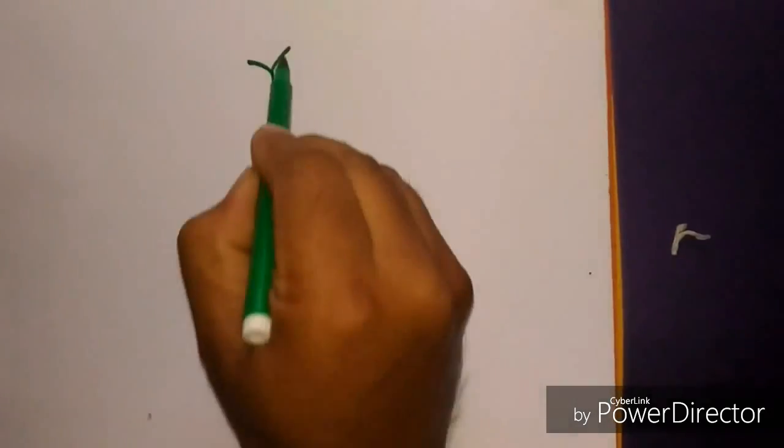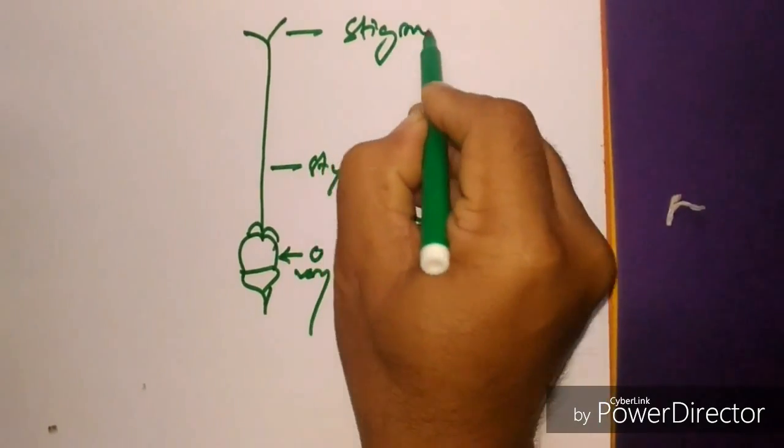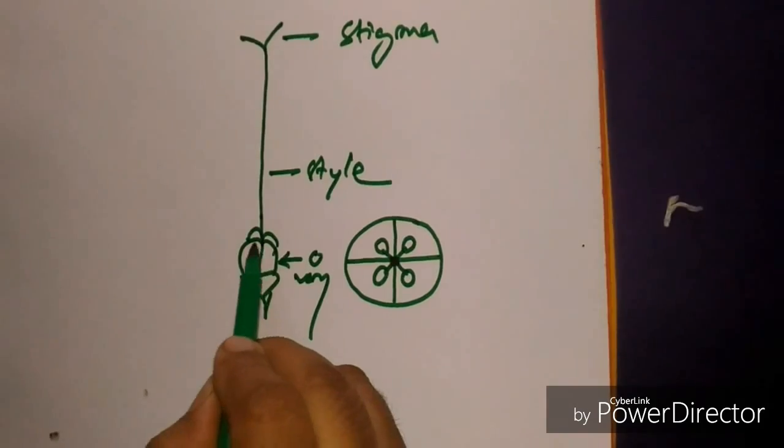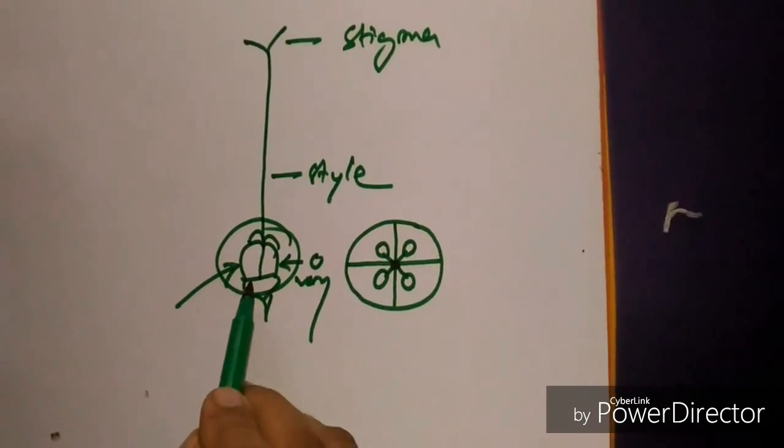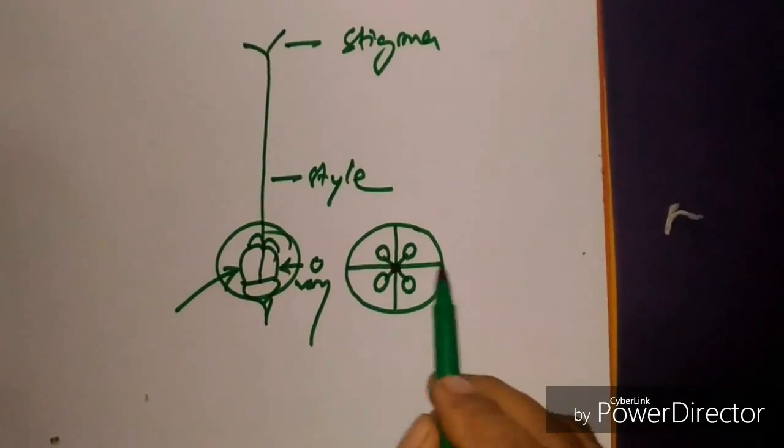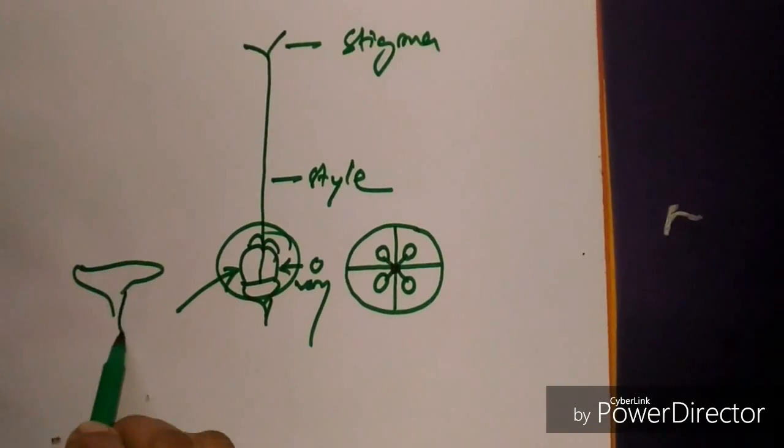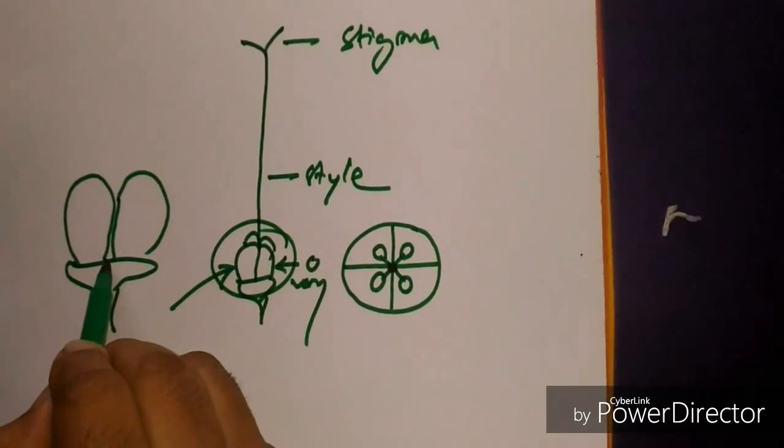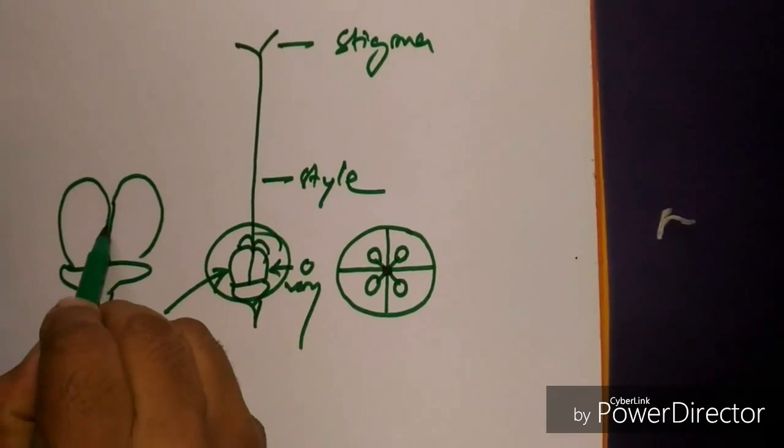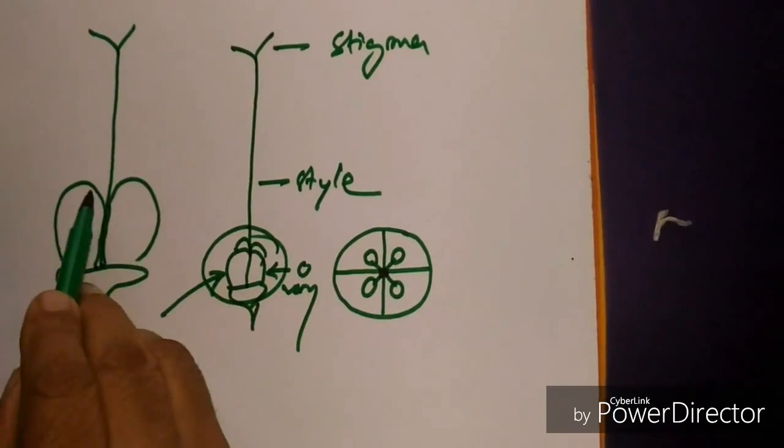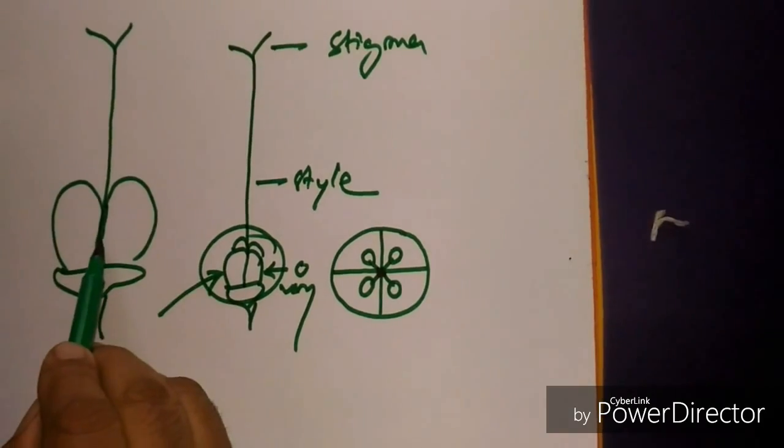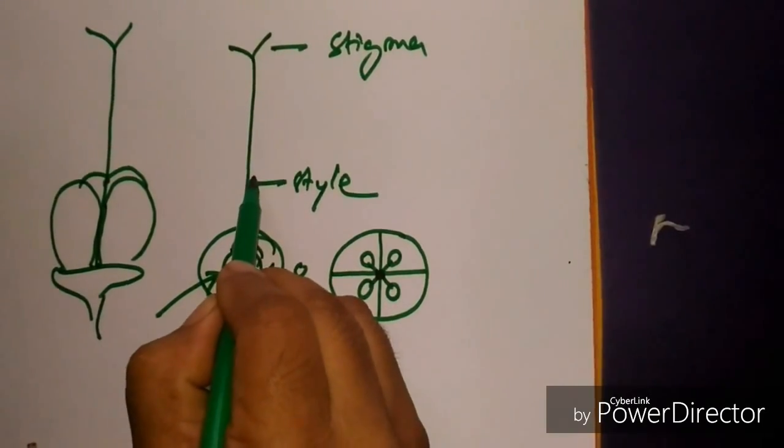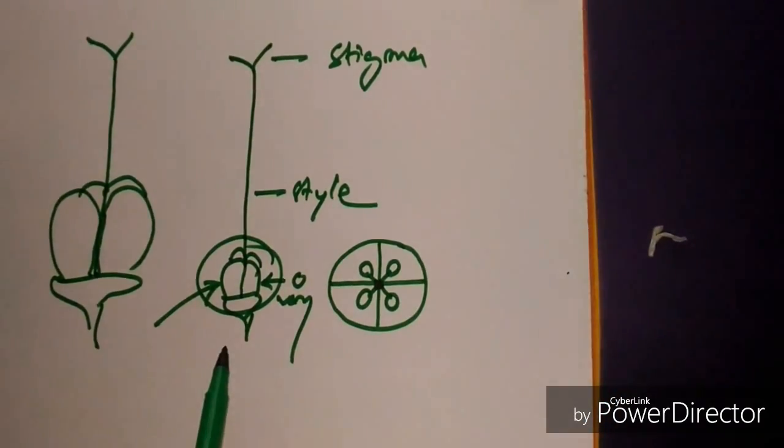This one is style, this one is stigma. Here the style is gynobasic. The gynobasic style is an important character of this family. Why is it gynobasic? Suppose this one is the thalamus and these are the base of the gynoecium and from here the style.